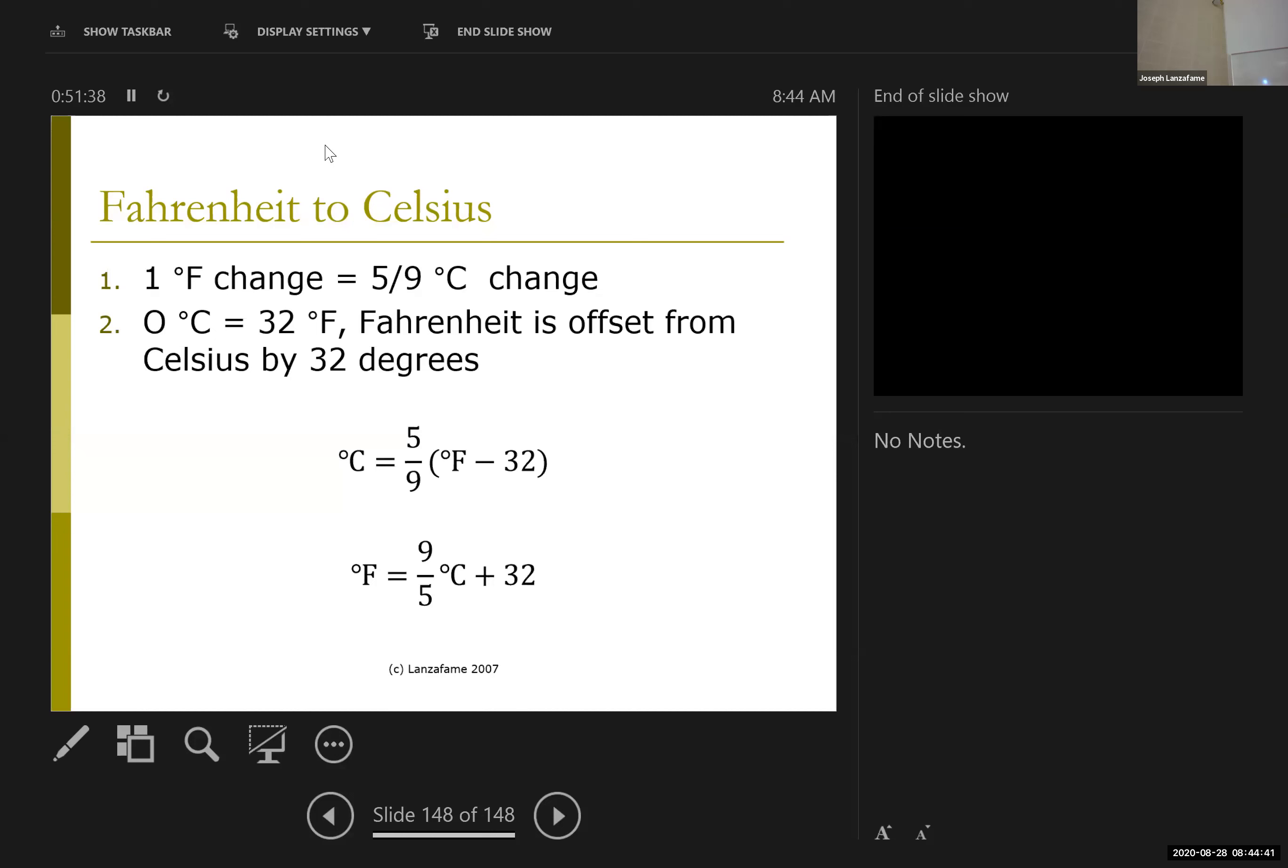And so I need to recalibrate the size of the degree and shift to zero. So as you've probably seen before, one of these two or both of these conversion equations, all you're really doing is recalibrating the size of a degree, which is what the five ninths is doing. Or if I'm going the other way, the nine fifths, and then I need to move the zero 32 degrees one way or the other, depending on whether I'm going from Fahrenheit to Celsius. And so the minus 32 is moving the Fahrenheit 32 degrees down to zero degrees Celsius and recalibrating the size of the degree with the five ninths.